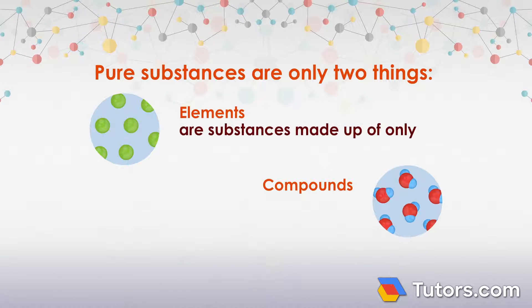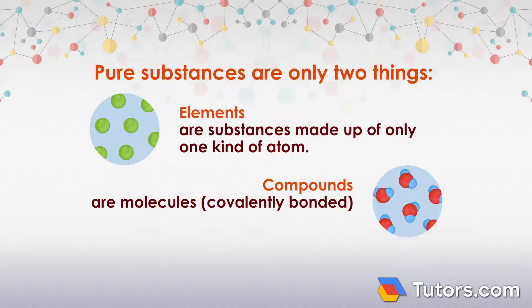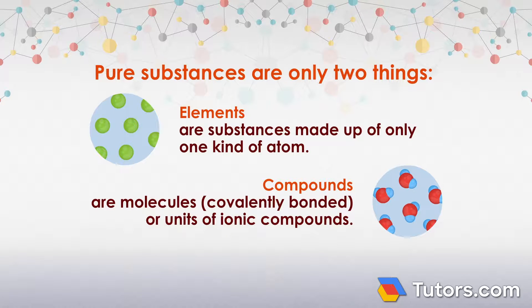Elements are substances made up of only one kind of atom. Compounds are molecules, covalently bonded, or units of ionic compounds.